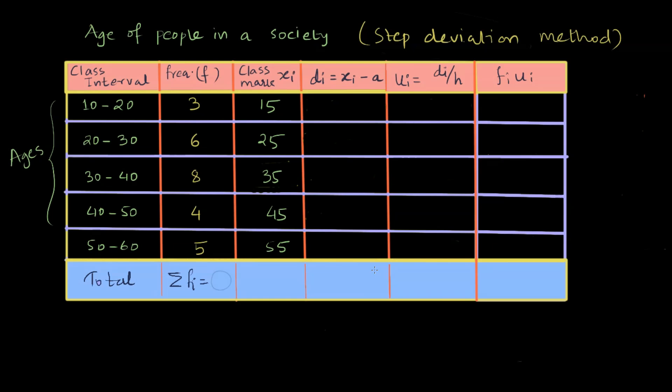Note that finding mean by direct method is just finding the summation fi xi divided by summation fi, or finding mean using assumed mean: a plus summation fi di divided by summation fi.